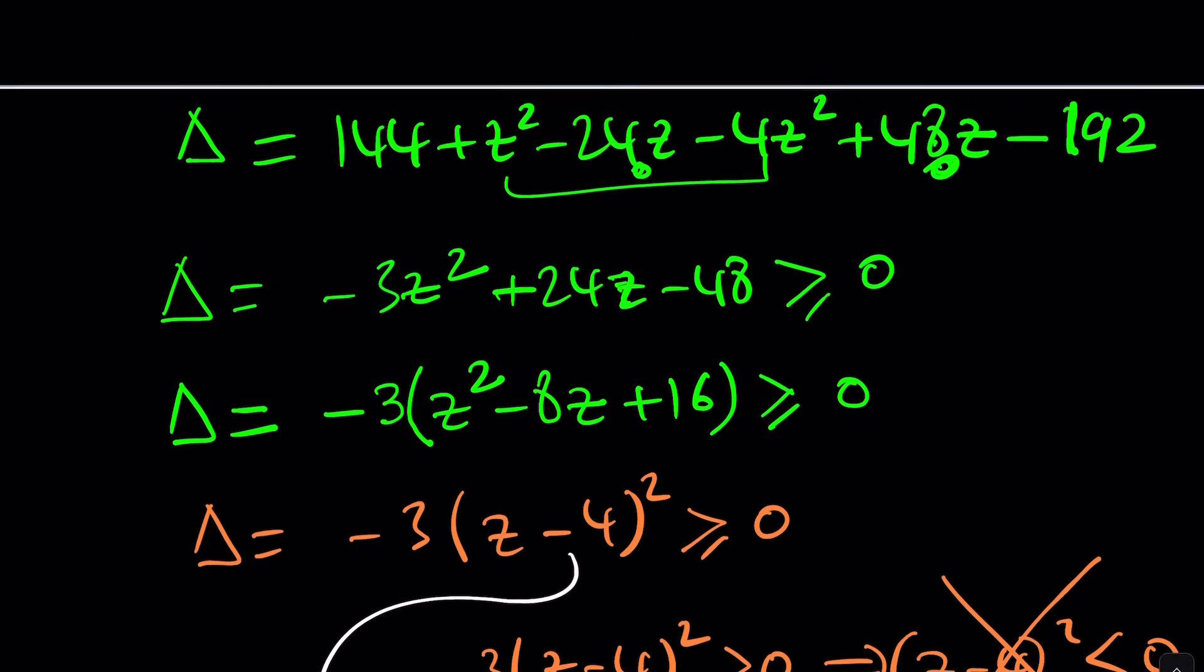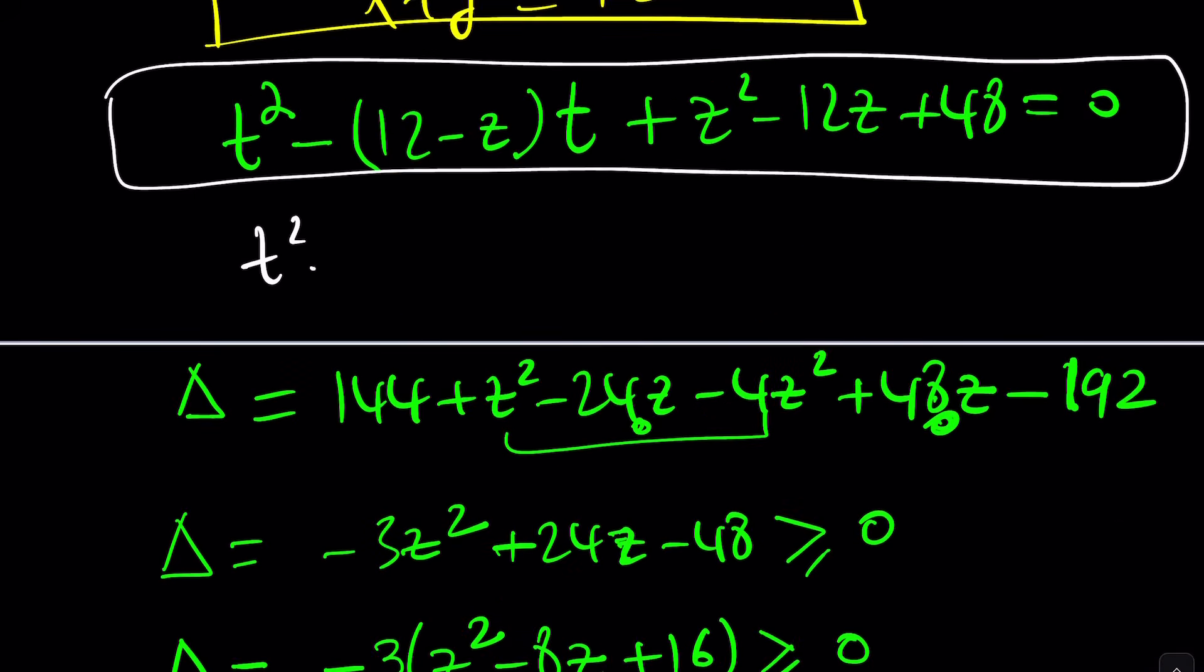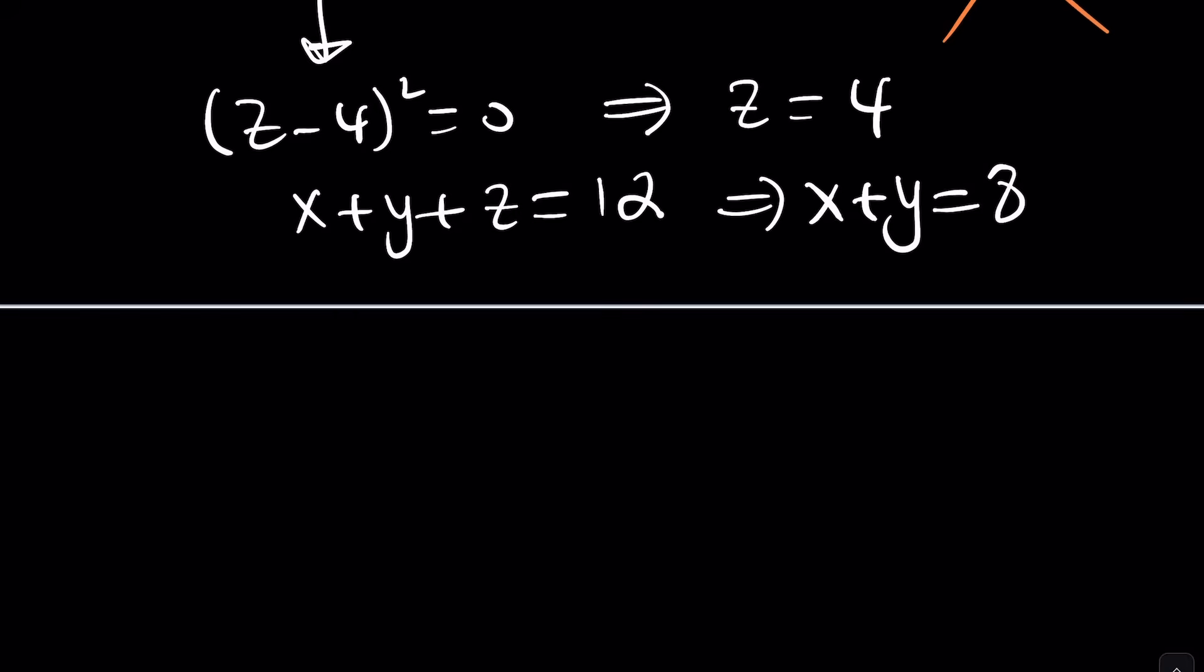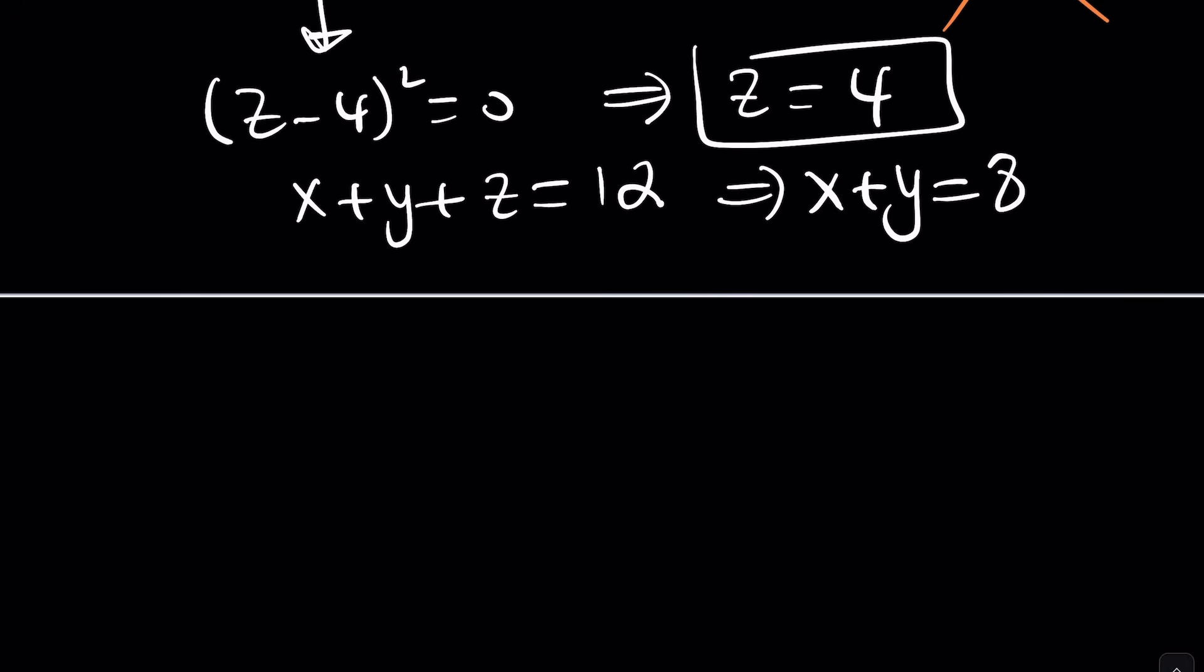Replace z with 4. And then you'll get t squared minus, this will be an 8t. And if z is equal to 4, 16 minus 48 plus 48, that'll be a 16. And guess what? This is going to give you the same perfect square. And everything is perfect. Everything is awesome. T equals 4, which means x and y are also 4. Wow, that's interesting. z is 4, x is 4, y is 4. So x, y, and z are all equal, and they are all equal to 4. Now, why is that happening? That's a good question. Before I get into that, and before I show you the graph, which I think is awesome, let me go ahead and talk about something else.